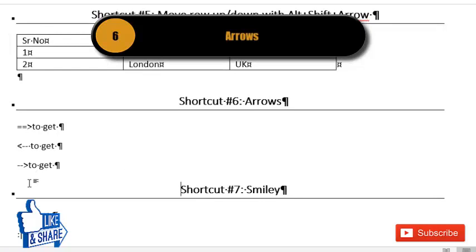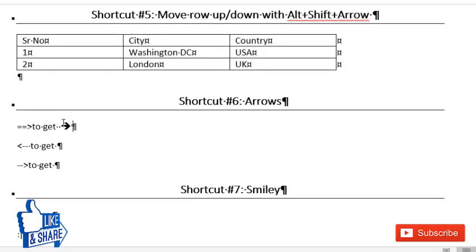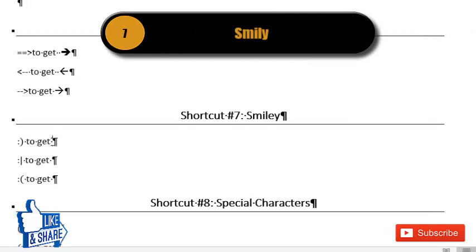The sixth shortcut: to get a double-headed arrow, type double equal signs followed by less-than and greater-than signs. To get a left arrow, press less-than sign and then two hyphens. To get a right arrow, use two hyphens followed by a greater-than sign. This is a quick way of getting arrows in Word.